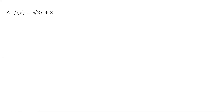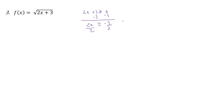With this one, we're looking for the inverse. The first thing we have to think about is what is going to be our restriction. We have to have greater than zero for this, so 2x plus 3 has to be greater than or equal to zero, because we can't have a negative under the radical. Subtracting 3, we get x is greater than or equal to negative three halves. So that's where it's restricted.